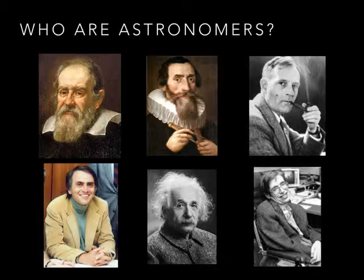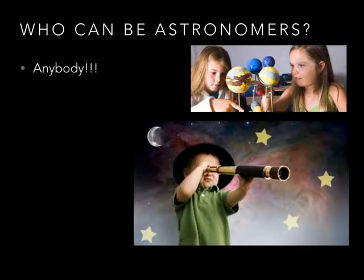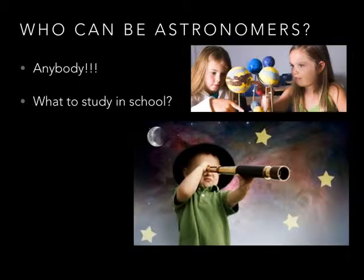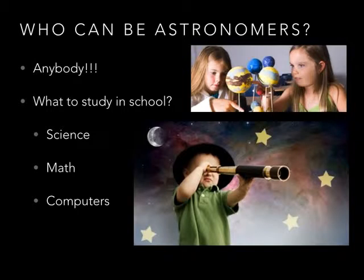But astronomers don't just look like those old guys — they're not just old crusty white dudes with funny costumes. They can be women, they can be minorities, they can be anybody. Anybody can be an astronomer — you could be one. What do you have to study in school? Math, science, astronomy, and computers. You've got to learn how to work with computers.